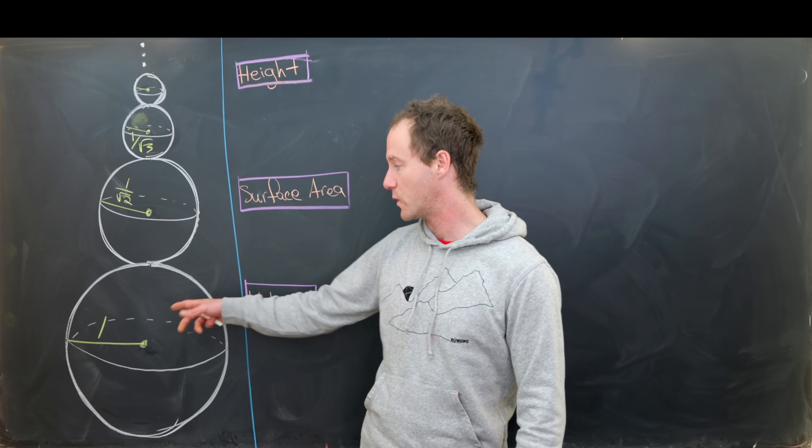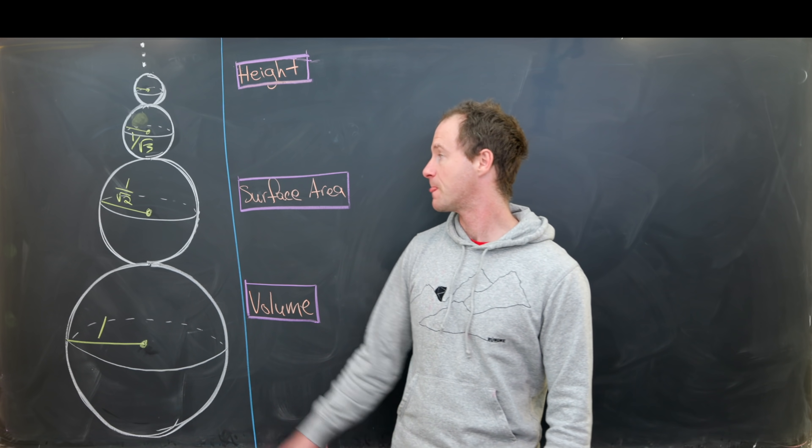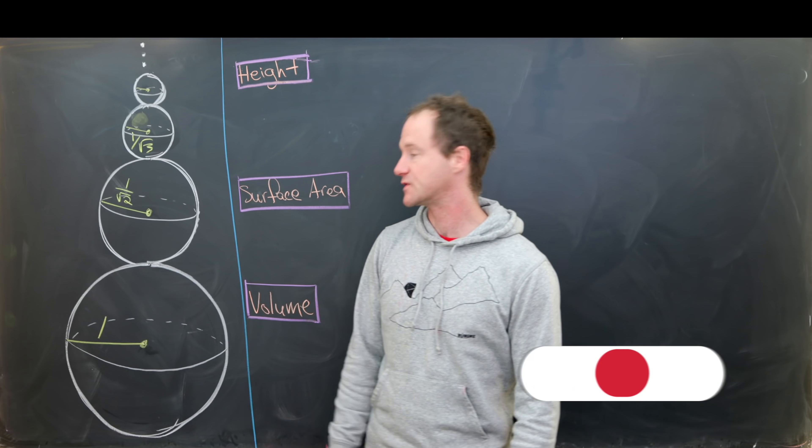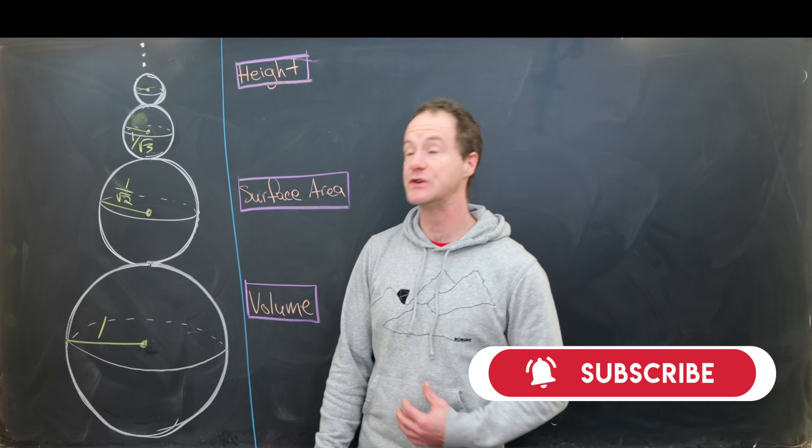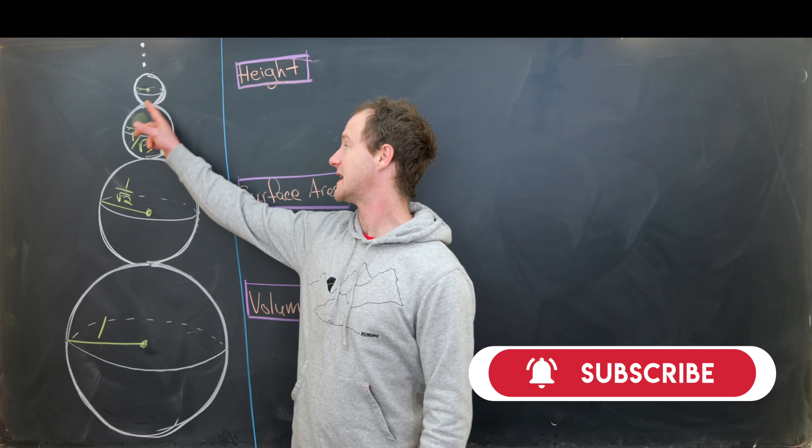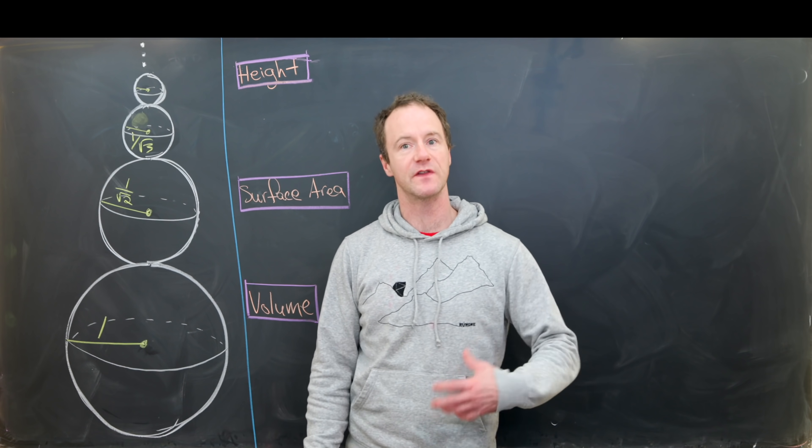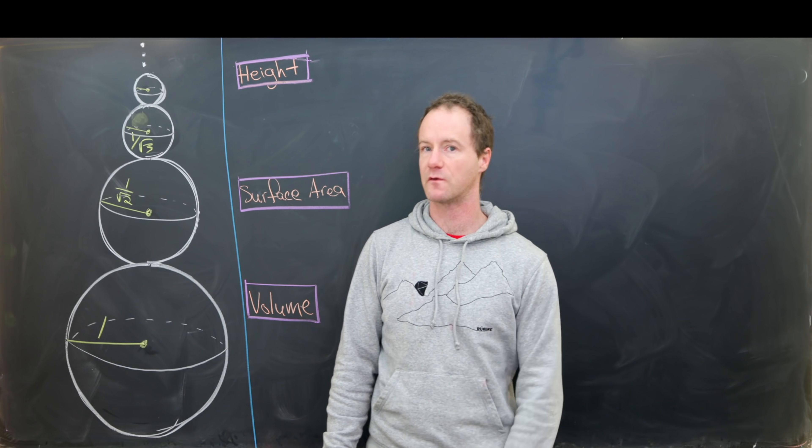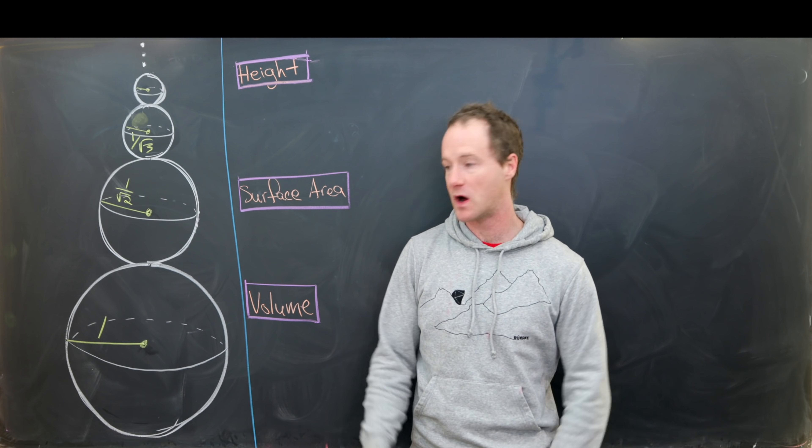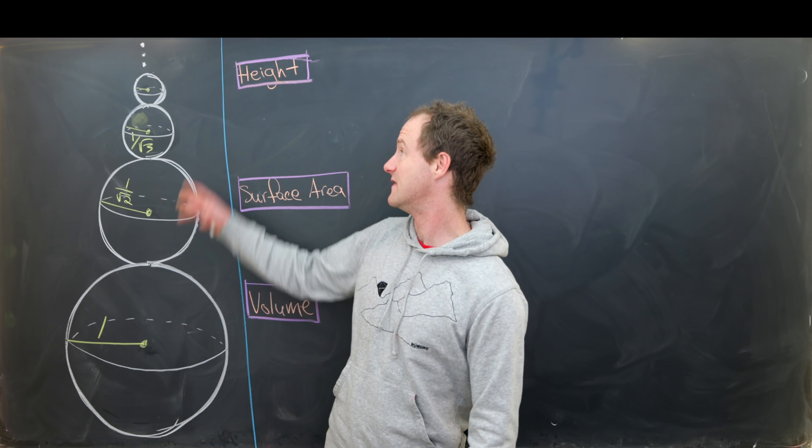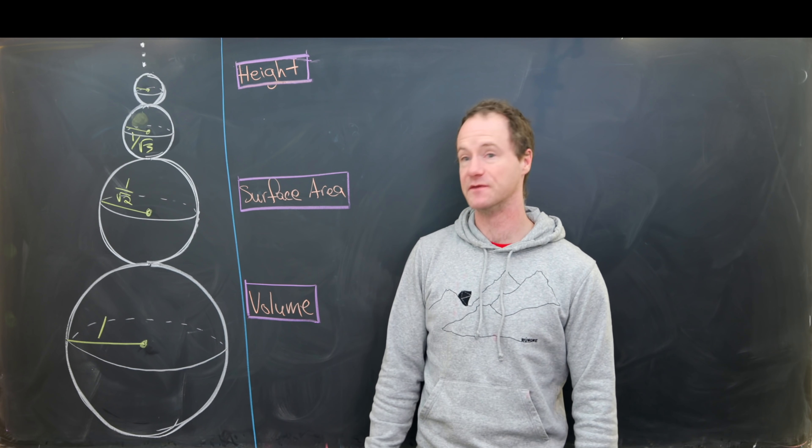We've got one at the bottom with radius one unit, one right above it which has radius one over the square root of two units, and then the one stacked on top of that has radius one over the square root of three units, and then one over the square root of four units, and then one over the square root of five units, so on and so forth. Like I said, this is an infinite stack of spheres.